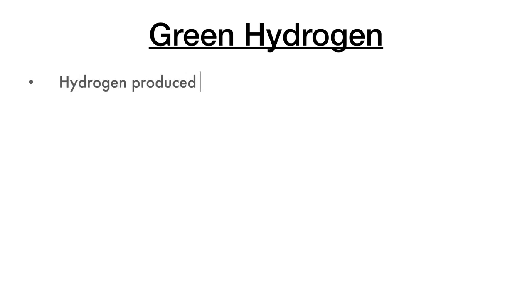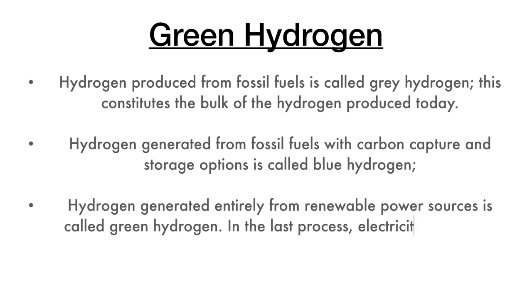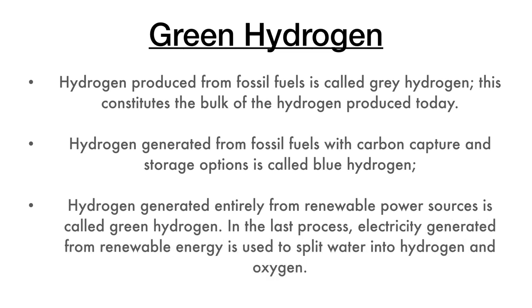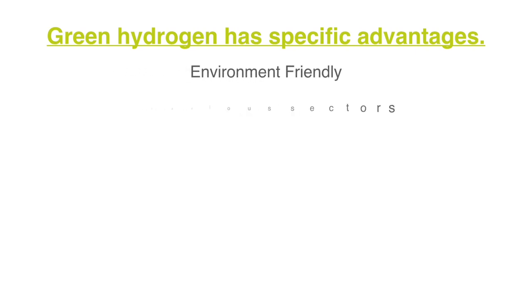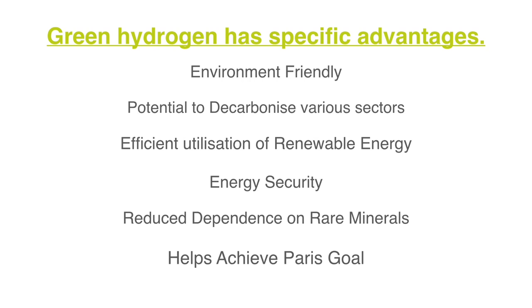The next headline is about green hydrogen. Hydrogen produced from fossil fuels is called gray hydrogen — this constitutes the bulk of hydrogen produced today. Hydrogen generated from fossil fuels with carbon capture and storage is called blue hydrogen. Hydrogen generated entirely from renewable power sources is called green hydrogen. In the green hydrogen process, electricity from renewable energy is used to split water into hydrogen and oxygen. Specific advantages of green hydrogen: it is environment-friendly, has the potential to decarbonize various sectors, uses renewable energy efficiently, is good for energy security, reduces dependence on rare minerals, and will help in fulfilling the Paris Agreement goals.